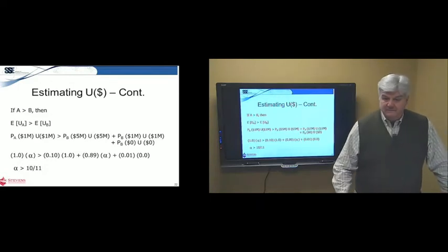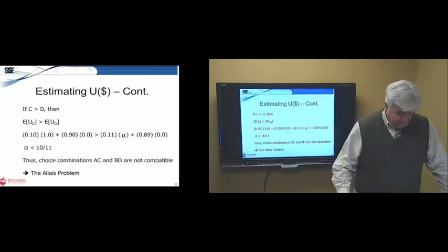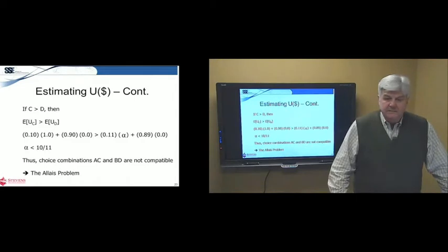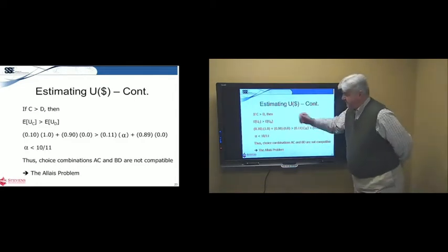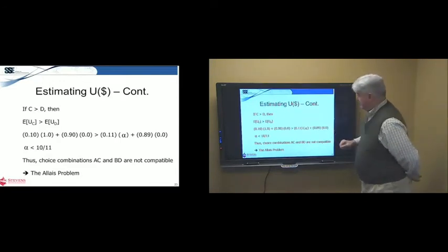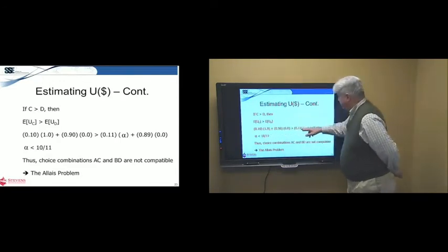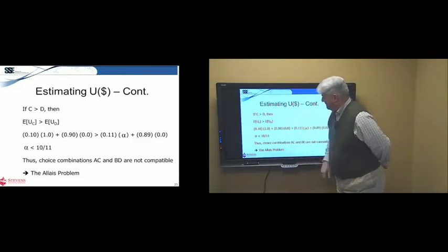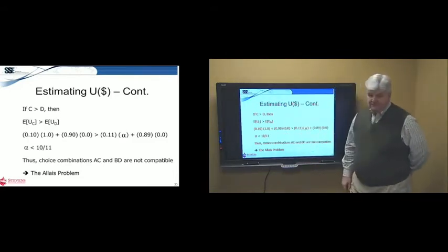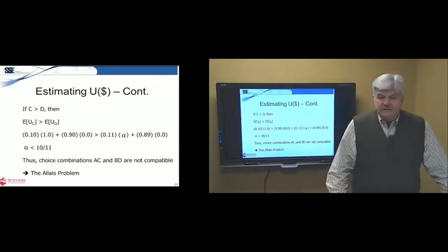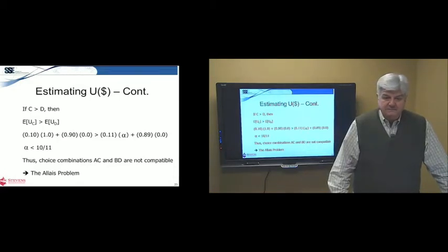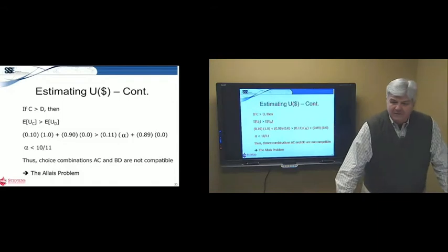Now, let's say you picked C, preferred to D. Then, the utility of C must be greater than the expected utility of D. We formulate our equation again, fill in the numbers, and we get alpha is less than ten-elevenths. What we find out is the choice combinations A and C and B and D are not compatible. If you picked A and C, you were not rational across those two choices or B and D. This is called the Allais problem. It's a famous problem. A Frenchman formed it.